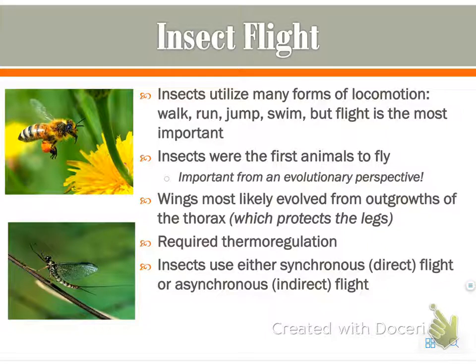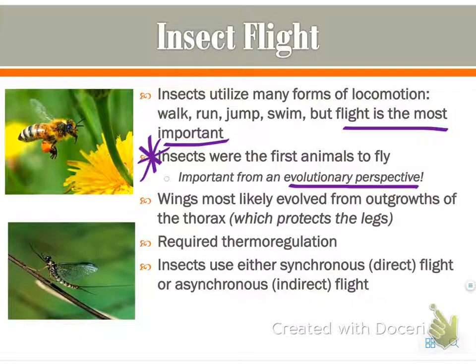Insects are known primarily for their flying, and they use many forms of locomotion in addition to flying — they can walk, run, jump, swim — but flight is arguably the most important. They were actually the first animals to fly, which is very important from an evolutionary perspective. Flying allowed them to move further to gather food, escape predators, etc. The wings most likely evolved from outgrowths of the thorax, which is what protects the legs.